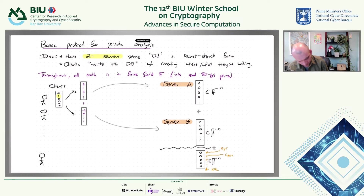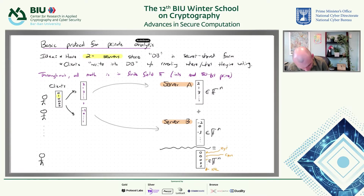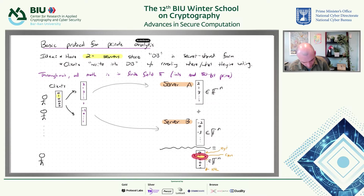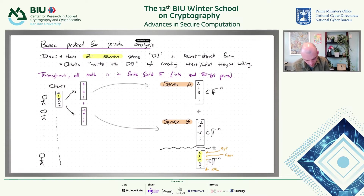Each server adds the client's share into its accumulator. Once this happens, the logical state of the database is still all zeros except there's a one in the position of the client's update. If this client had a one in the second index of its vector, the logical database state now has a one there. The rest of the clients do this over the course of the day, and as each client makes an update, the numbers in this logical database increase, eventually incorporating the homepages of all clients.